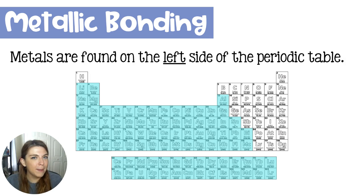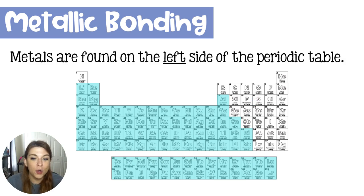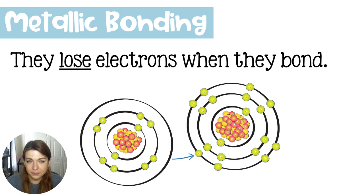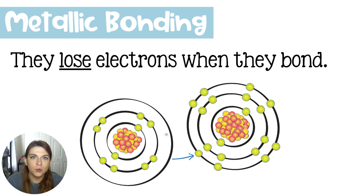You may remember that metals are found on the left side of the periodic table, and the dividing line is the staircase line where you will find the metalloids, and everything to the right is a non-metal. So the periodic table is mostly metals. These metals like to lose electrons when they bond.